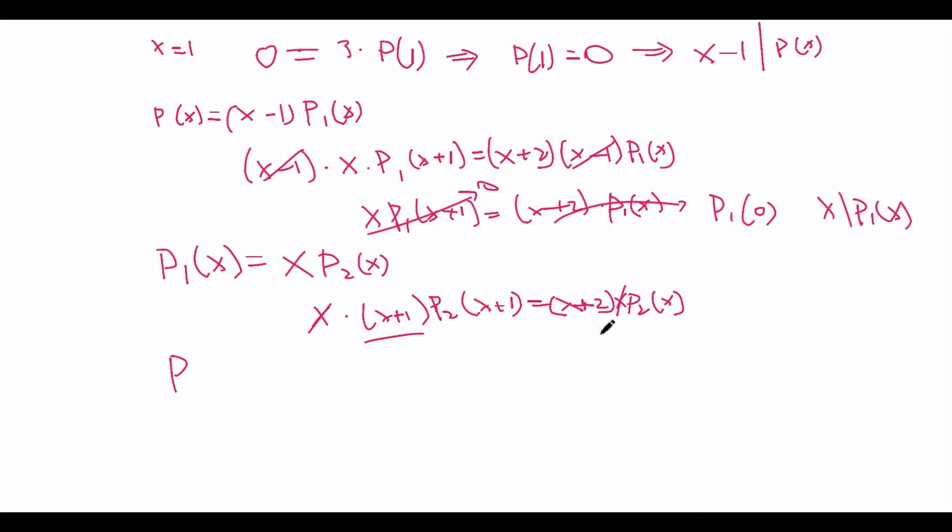Again, plug in x=-1. You get that -1 is a root of P₂(x), which means that x+1 divides P₂(x). So that means we can plug in P₃(x). P₂(x) is equal to (x+1) times P₃(x).